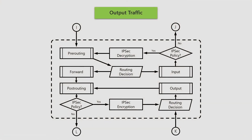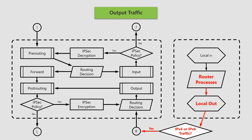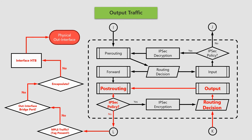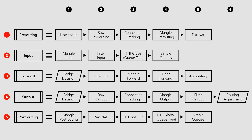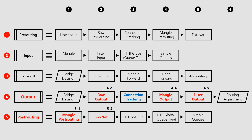For the third type of expected traffic, we have output, which will be generated by the class AP itself, enter the routing flow from point K, pass the routing decision, hit the output and post-routing processes, and finally exit the router from point L toward the physical out interface. Output traffic generated by the router hits the different stages of the output process and then goes through the post-routing steps. Therefore, stages 4.2, 4.4, 4.5, 5.1, and 5.2 are the steps we'll configure, and the ping packets will also hit connection tracking.